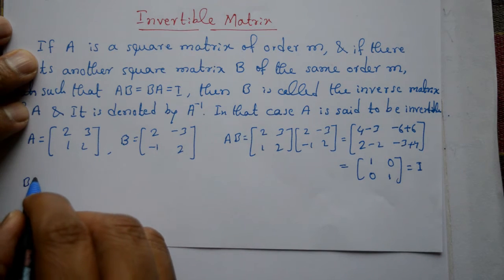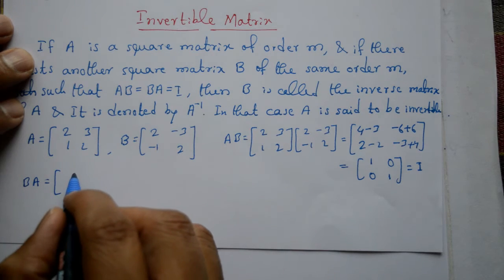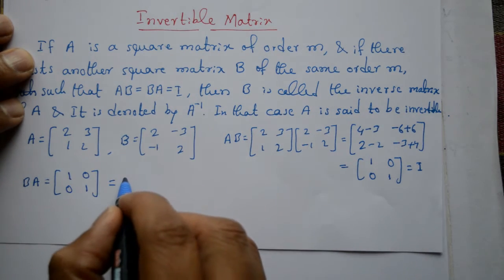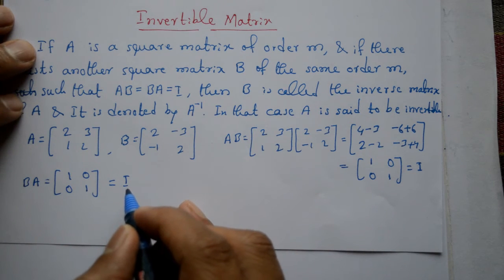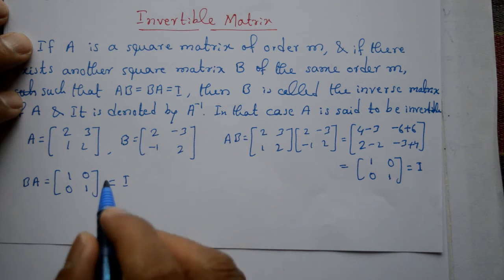Agar hum B into A karenge, B into A kya hoga? 1, 0, 0, 1 phir se identity matrix aega. Iska is case mein kya hota hai, B is said to be invertible.